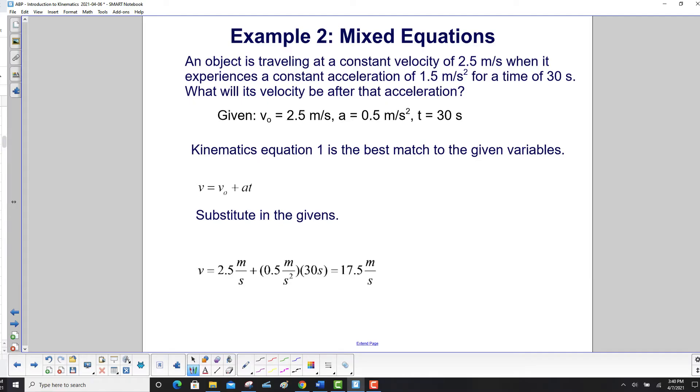We write our givens to help us determine what equation we should use. Let's see. We have v zero, we have a, we have t, and we'd like to find v. So there's no position anywhere here, so we're going to have kinematics equation 1.